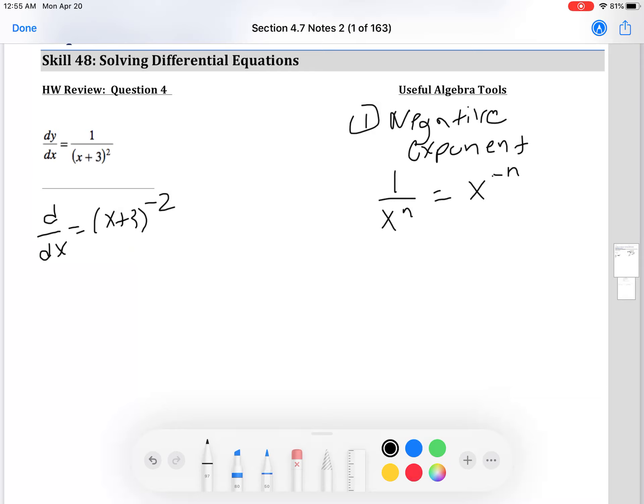So what we effectively did here is we wrote this so that there wasn't a fraction on one side, and all that you would need to do is just move that dx to the other side. And just by doing that tool of algebra, we are able to turn this into a conventional u substitution type of integral.